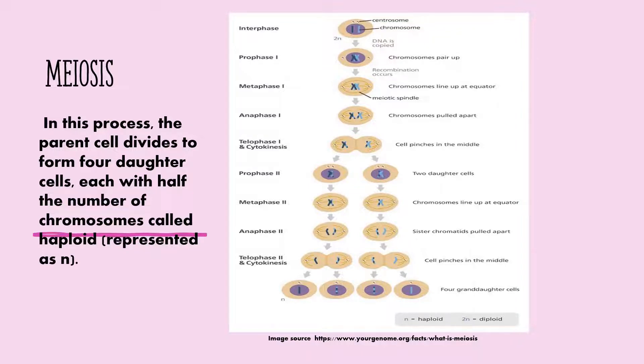In meiosis II, the two parent cells which are haploid give rise to four daughter cells which are also haploid. Hence, it is called equational division.